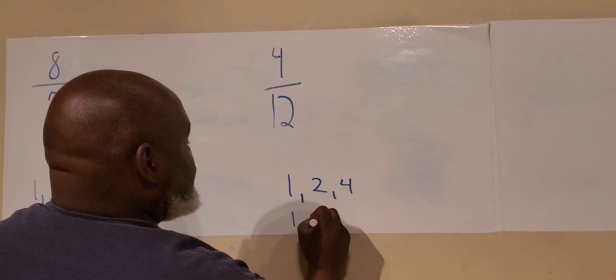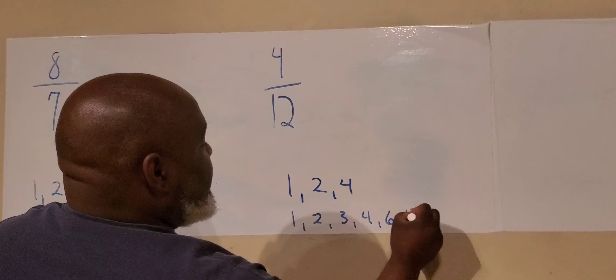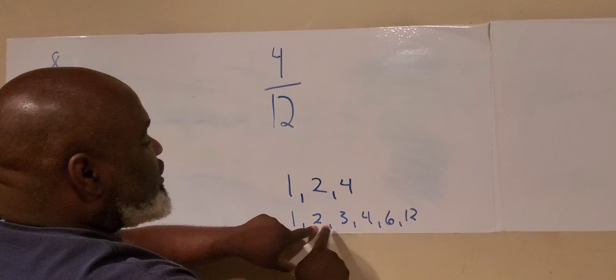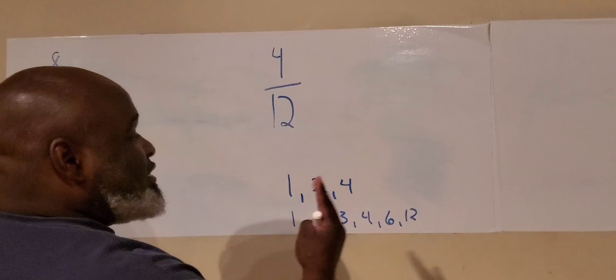What goes into 12 is one, two, three, four, six, and 12. Twelve times one is 12. Six times two is 12. And three times four. And four times three is 12.